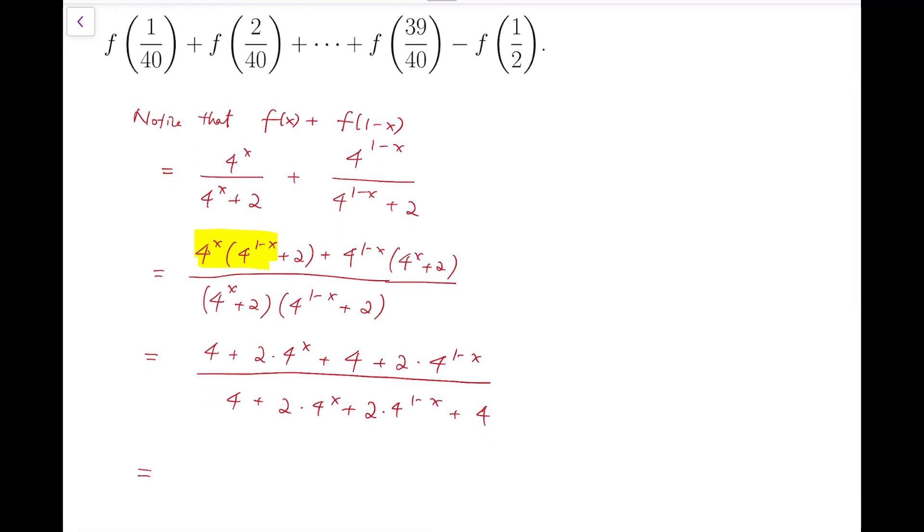And so, both the numerator and denominator will be 8 plus 2 times 4 to the x plus 2 times 4 to the 1-x. And so, the sum is actually equal to 1.